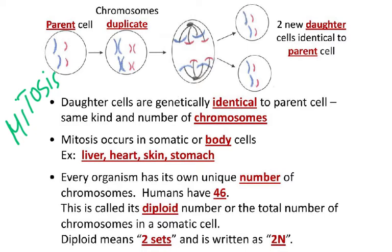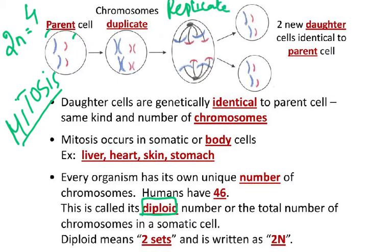In mitosis, consider a parent cell with four chromosomes — this is called the diploid number, written as 2n, so 2n = 4 means two pairs. The chromosomes duplicate or replicate, forming an exact replica — from four we now have eight chromatids. After cell division, we get two new daughter cells each with four chromosomes, genetically identical to the parent cell.